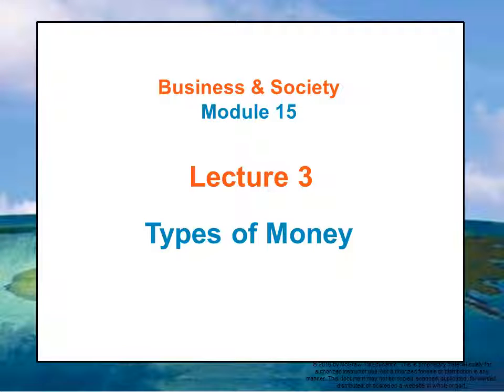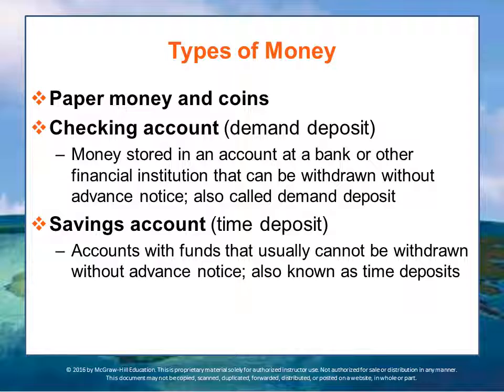So now let's talk about the types of money. While paper money and coins are the most visible type of money, the combined value of all the printed bills and all the minted coins is actually rather insignificant when compared with the value of the money that is kept in checking accounts, savings accounts, and other monetary forms.